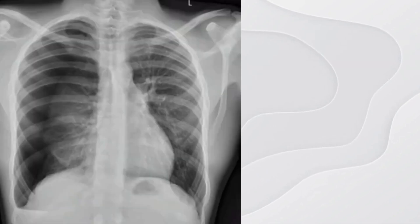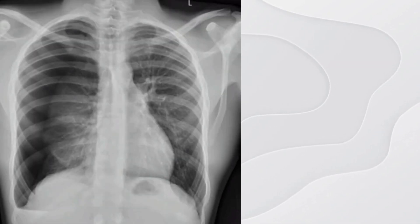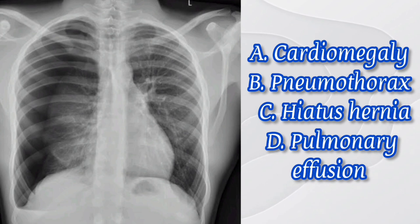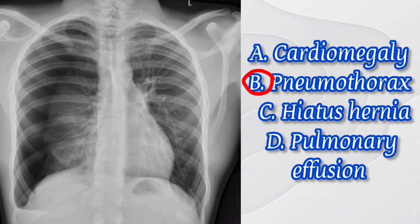Number nine: review the chest X-ray radiograph and select the most appropriate diagnostics. The options are: A) cardiomegaly, B) pneumothorax, C) hiatus hernia, and D) pulmonary effusion. The answer here is B) pneumothorax.